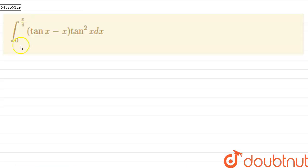Hello guys, today our question is integral 0 to π/4 of (tan x - x) tan²x dx. So we can let this equal to I. So I is equal to integral 0 to π/4 of (tan x - x) tan²x dx.